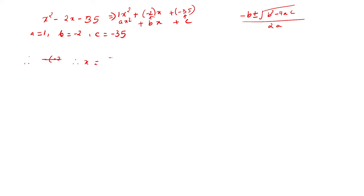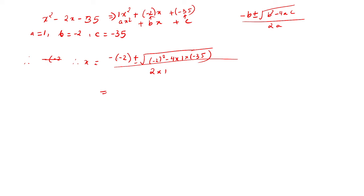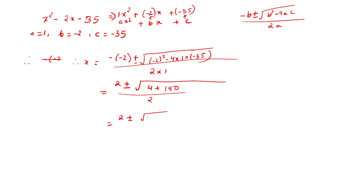Therefore, x equals minus of minus 2, plus or minus root over b squared — which is minus 2 squared — minus 4 into a which is 1, and c which is minus 35, divided by 2 into 1. This minus into minus becomes 2, plus or minus root over minus 2 squared gives 4, plus 4 times 35 gives 140, all divided by 2.